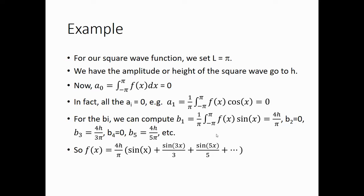So let's take a look at another example. So for our square wave function, we set L equal to pi. And then we have an amplitude or height of the square wave to go to h. And then a0 is the integral from minus pi to pi f of x dx. And that one, because half of it's above 0 and half of it's below 0, that works out to 0. And in fact, all the a sub i are 0. So a1 is 1 over pi minus pi f of x cosine x. That one equals 0. For the b sub i, we can compute b1 is equal to 4h over pi, b2 is 0, b3 is 4h over 3 pi, b4 is 0, and b5 is 4h over 5 pi. So our series becomes 4h over pi sine of x plus sine of 3x divided by 3 plus sine of 5x divided by 5. And that's how we derive our square wave function.